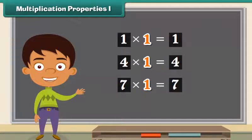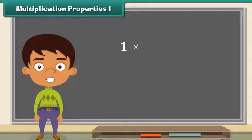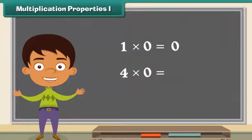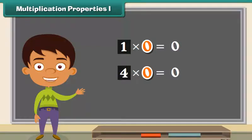Let's have a look at another property. 1 into 0 is equal to 0, 4 into 0 is equal to 0. It means if we multiply any number by 0, the result is 0.